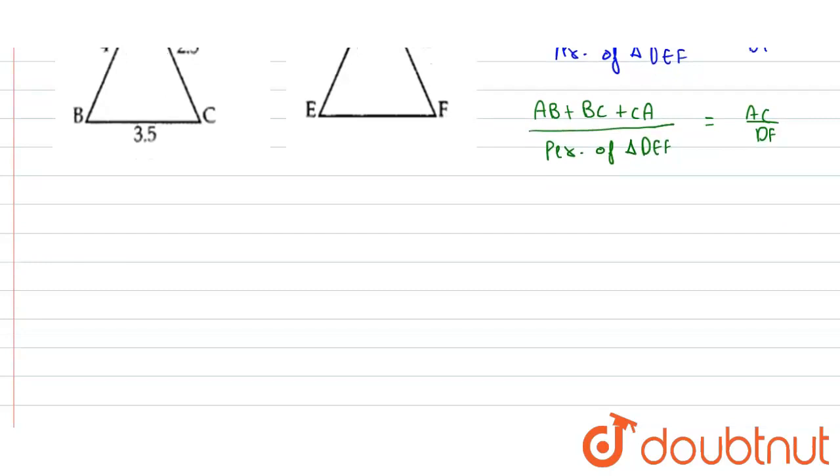By putting value, we get 4 plus 3.5 plus 2.5 upon perimeter of triangle DEF is equal to 2.5 upon 7.5.